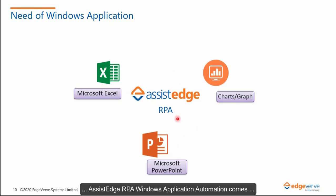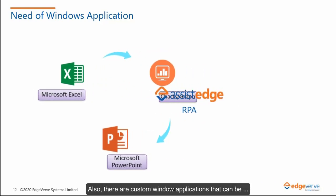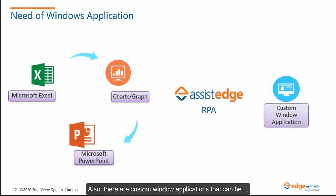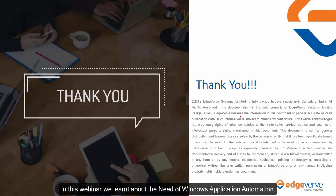And thus the Assistage RPA Windows Application Automation comes into the picture. Also, there are custom Windows applications that can be automated using Automation Studio of Stitch RPA. In this webinar, we have learned about the need of Windows Application Automation. Thank you.